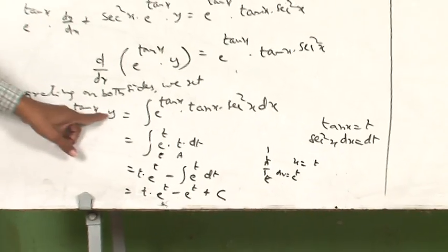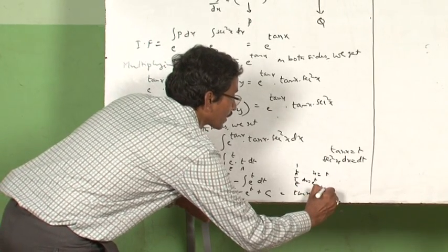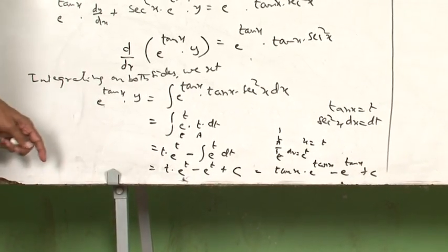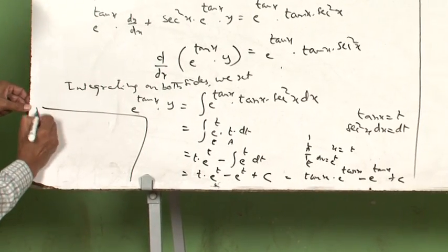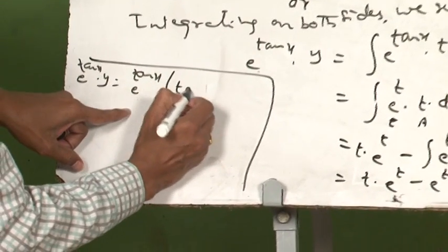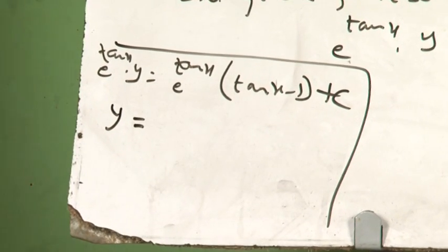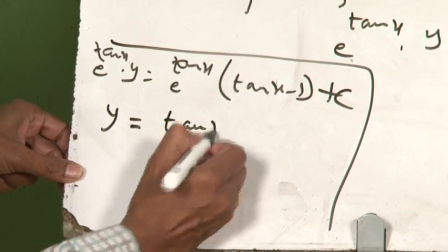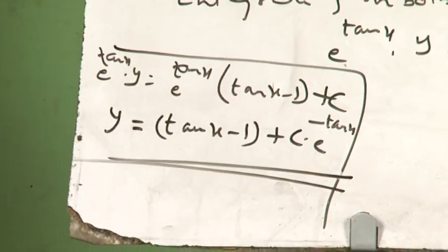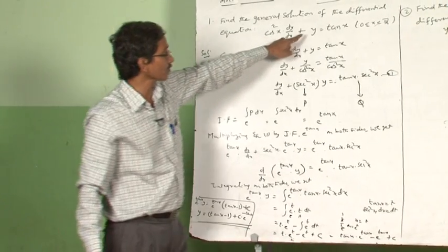Therefore, substituting back t equals tan x: e power tan x times y equals tan x times e power tan x minus e power tan x plus c. Taking e power tan x common: e power tan x times y equals e power tan x times (tan x minus 1) plus c. Dividing throughout by e power tan x, the general solution is: y equals (tan x minus 1) plus c times e power (negative tan x). This is the general solution of the given first order linear differential equation cos squared x times dy by dx plus y equals tan x.